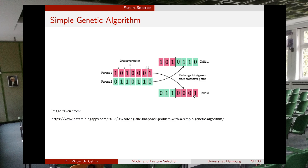If the coin says yes, you make the mutation: change a zero to a one or a one to a zero. The idea behind mutation, like in real life, is to add some changes that hopefully lead to better performance. This is a more elaborate way to generate feature subsets, but these algorithms are very powerful for optimization problems when the search space is very large.